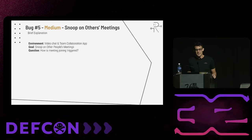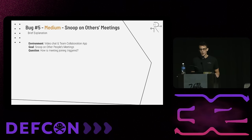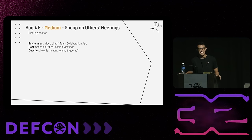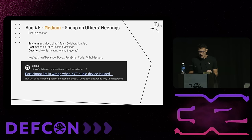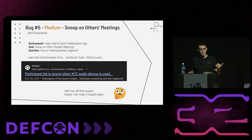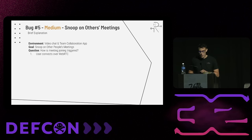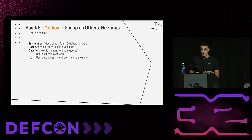Bug number five: snoop on other people's meetings. The target was a video chat and team collaboration app. I decided to focus on a specific goal: I wanted to be able to do creepy stuff in people's meetings. I read the developer docs, the JavaScript code, and the GitHub issues. In the GitHub issues, one popped up saying the participant list is wrong when a specific audio device is used. The participant list didn't get updated when the user has a broken audio device — so I thought, maybe I can make that happen and enter meetings without people knowing I'm there.